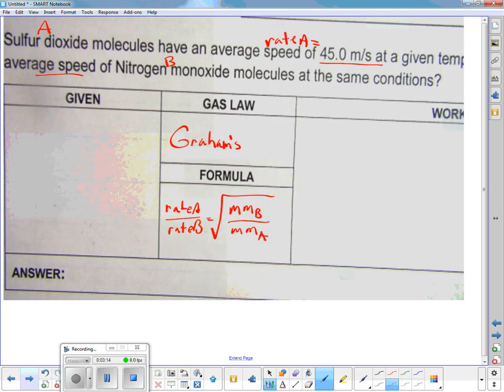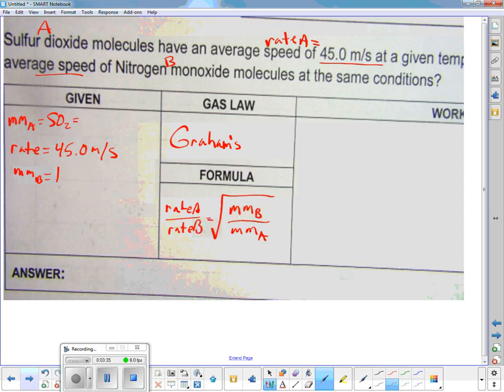I know the formula is rate A over rate B equals square root of mass B over mass A. Notice those did switch. Over here I'm going to look up molecular mass of A, which is sulfur dioxide. Didn't I just do that up above? Rate A equals 45.0 meters per second. And mass B this time is nitrogen monoxide, NO, 14.067 plus 15.999.